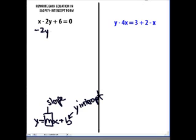So, the 2y stays where it is because it's on the correct side. We need to move the x over so it becomes negative x, and the 6 comes over and it becomes a negative 6. So far, so good.